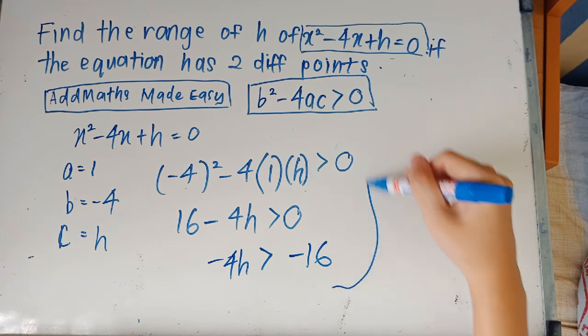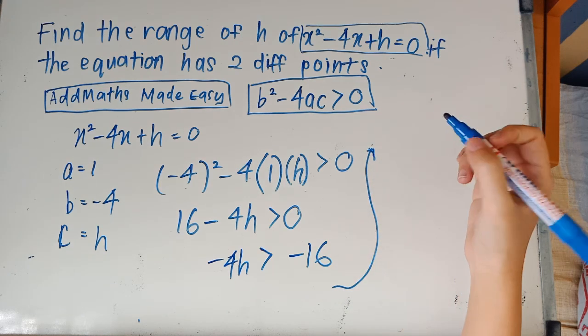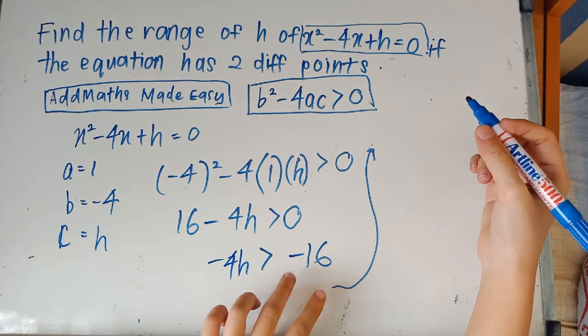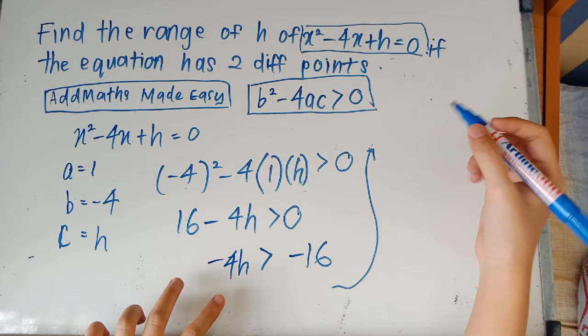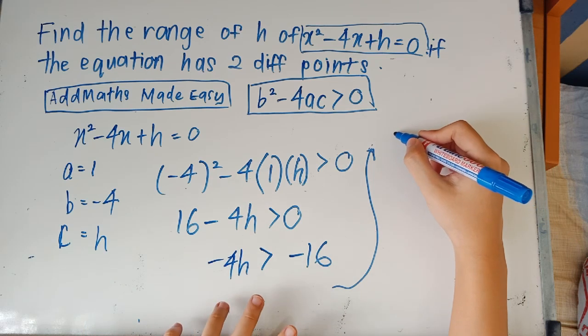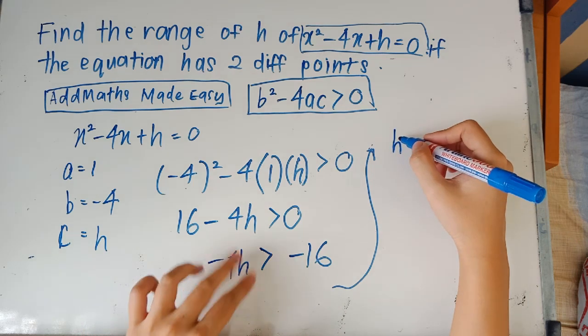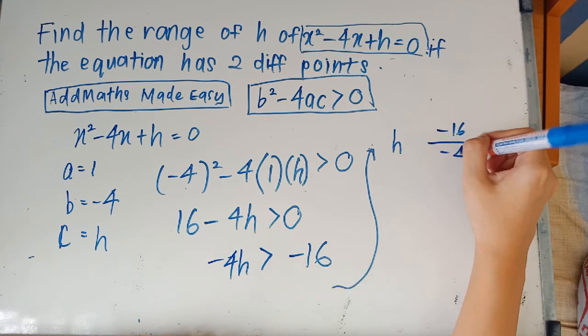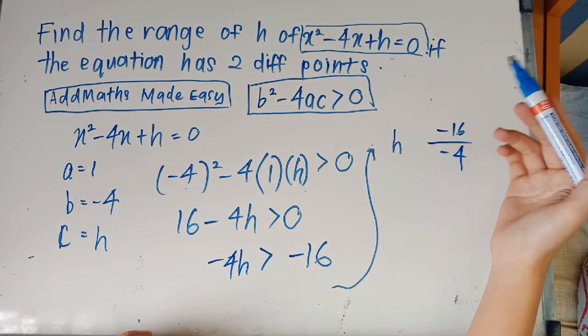Okay this next step here is what you have to really take note of. Now you want to get the value of h so you would have to take 16 and divide it by four so you get h on one side and you have negative 16 divided by negative four on the other side. And what I want you to take note of is the fact that you have to change the sign when you divide something by negative.